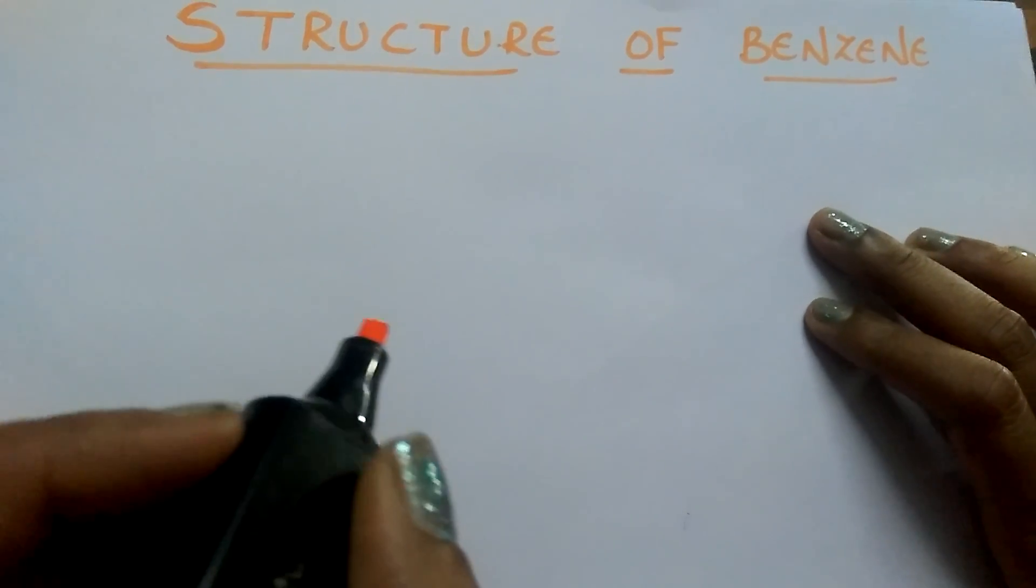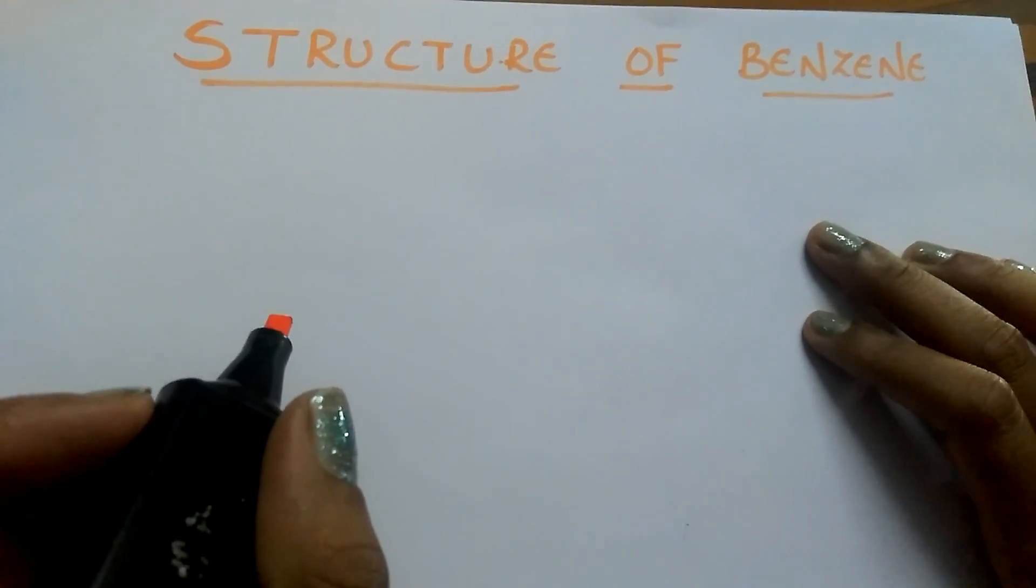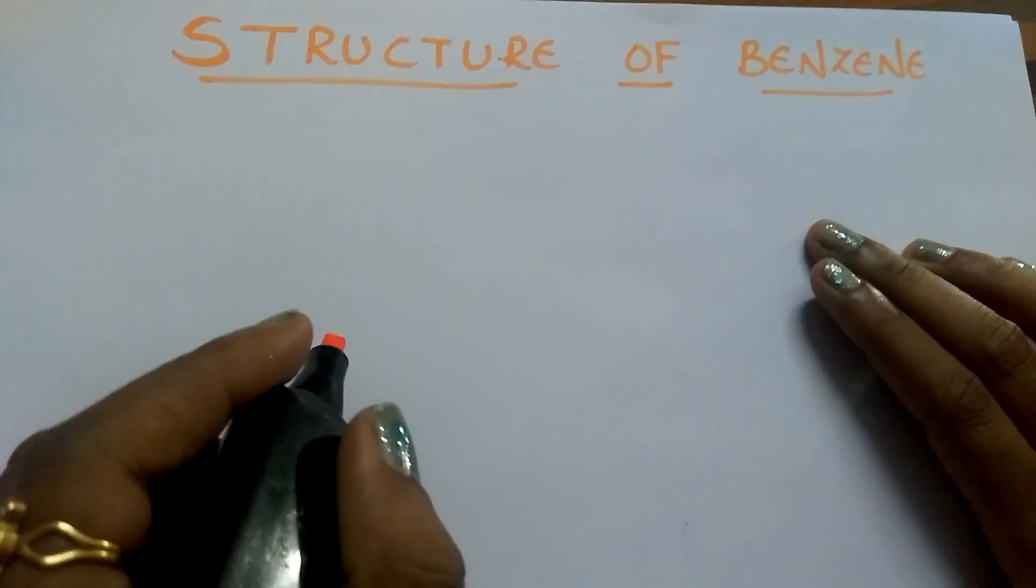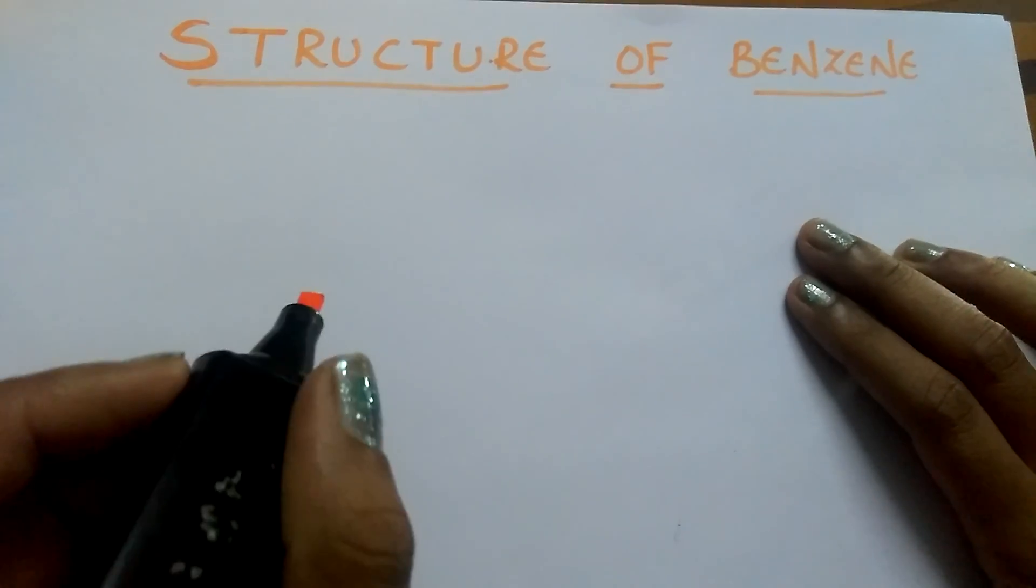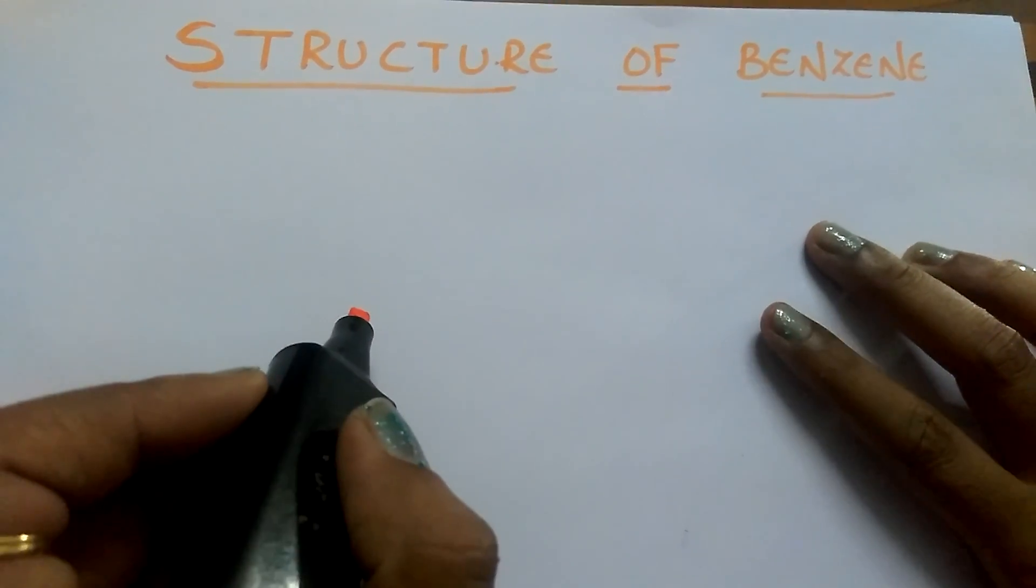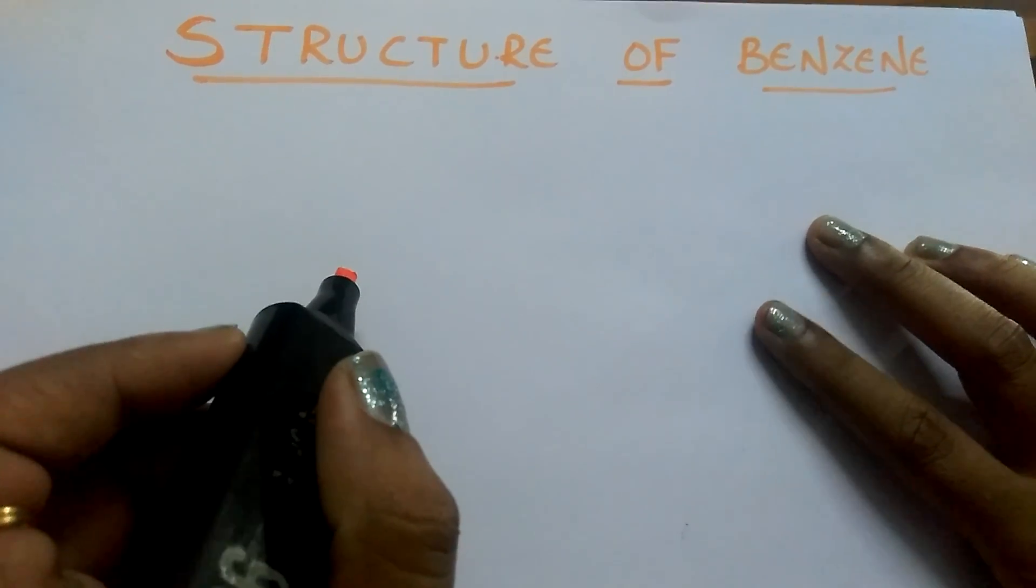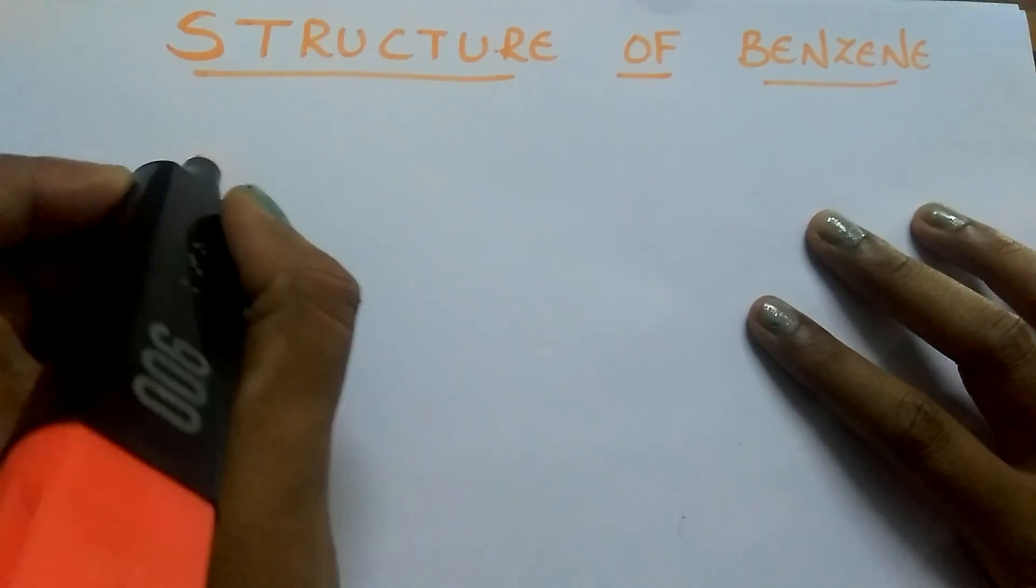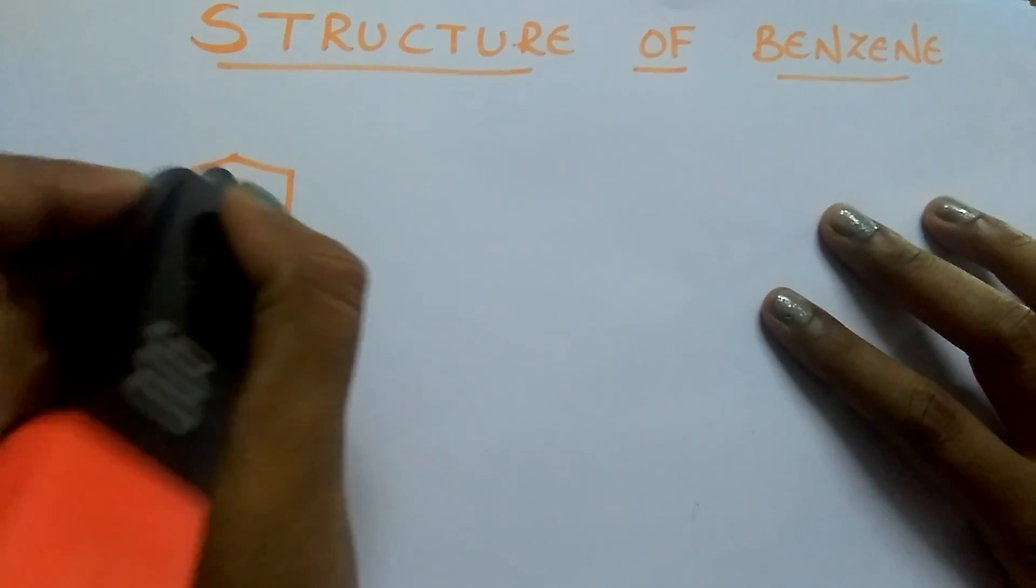One day when he was sleeping, he got a dream that one snake was putting his tail into his mouth. The same way he gave the structure of benzene that the sixth carbon is linked to the first carbon. This is the structure given by Kekule.